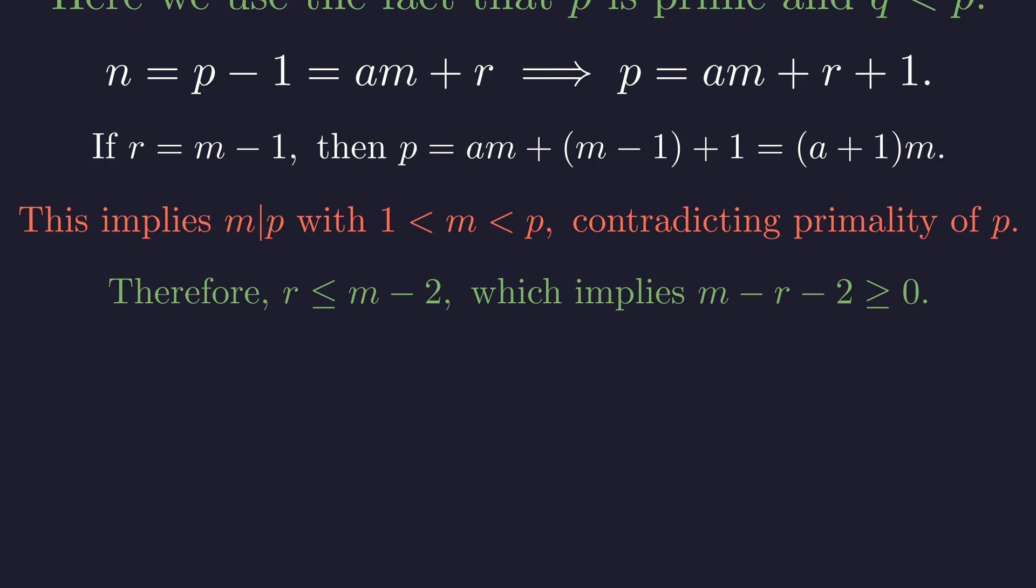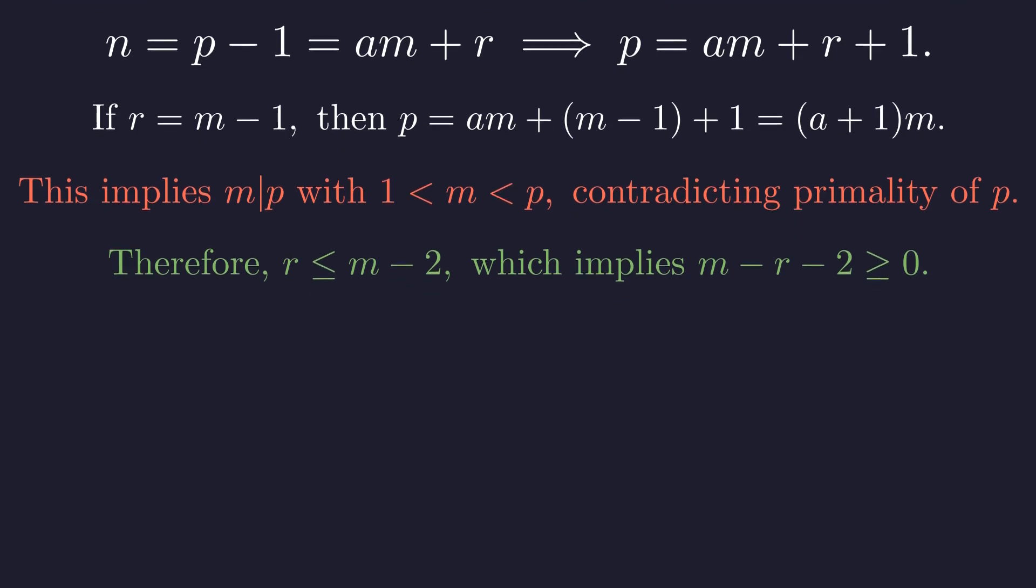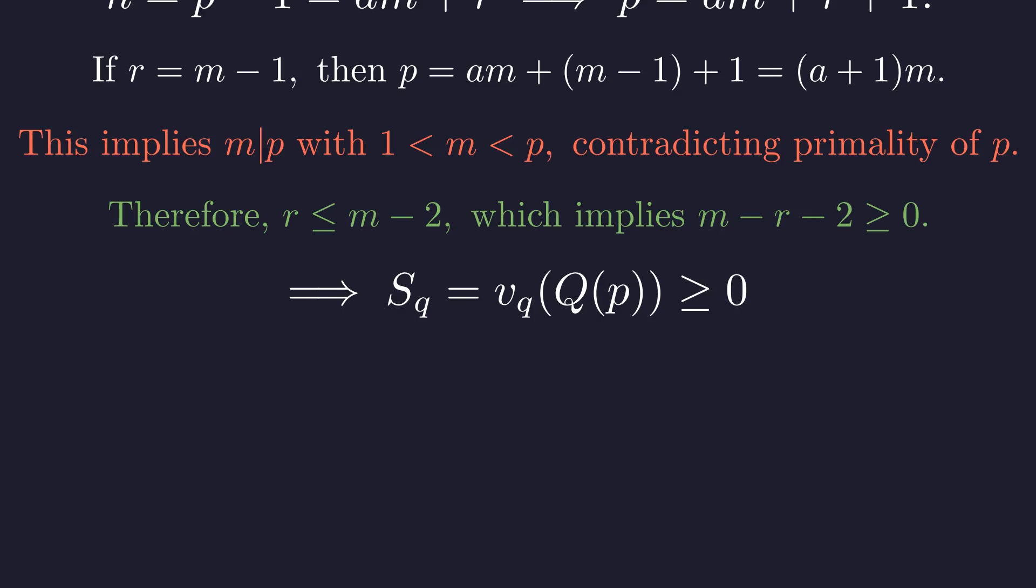Primality has rescued us! And with that beautiful argument, we've proven that the q-adic valuation of Q(p) is non-negative for every prime q less than p. The pieces are all falling into place.